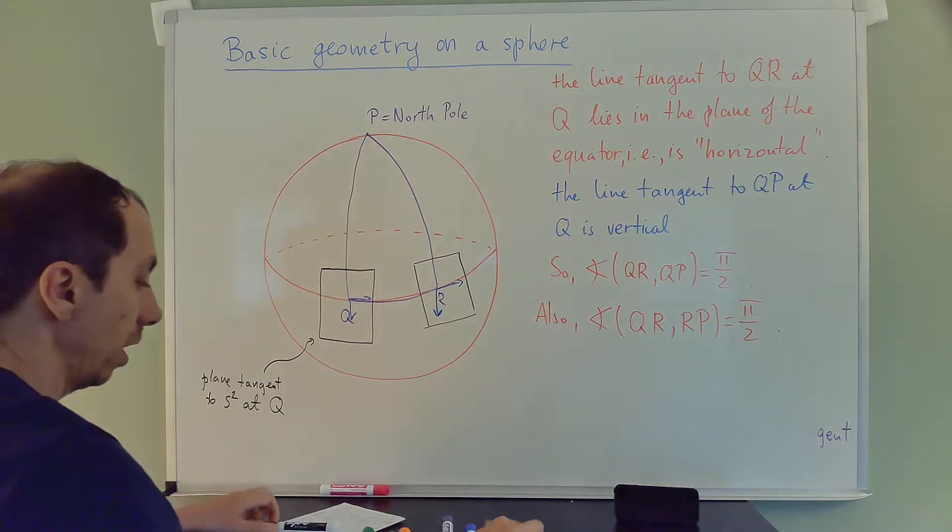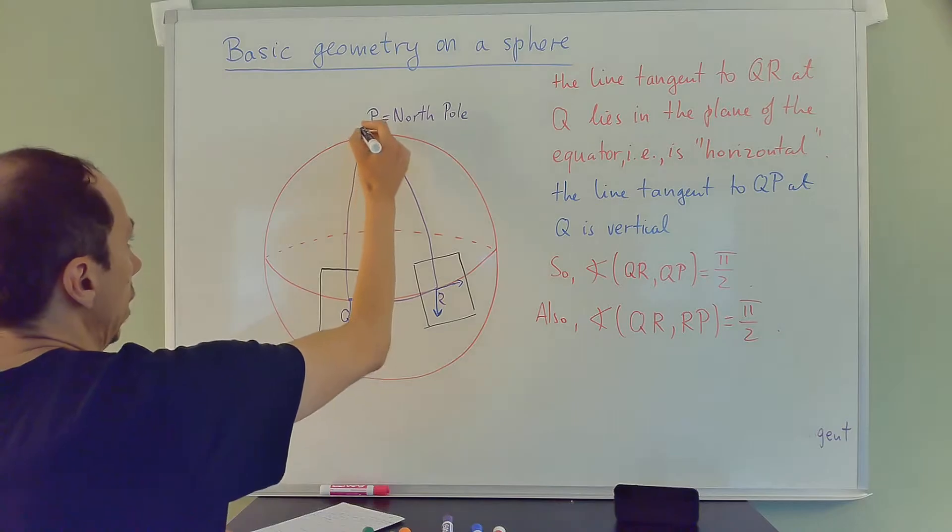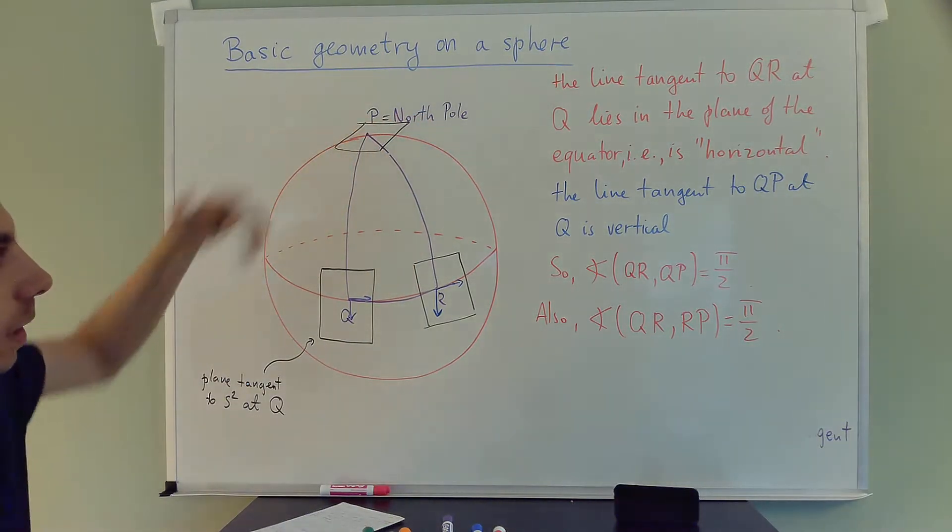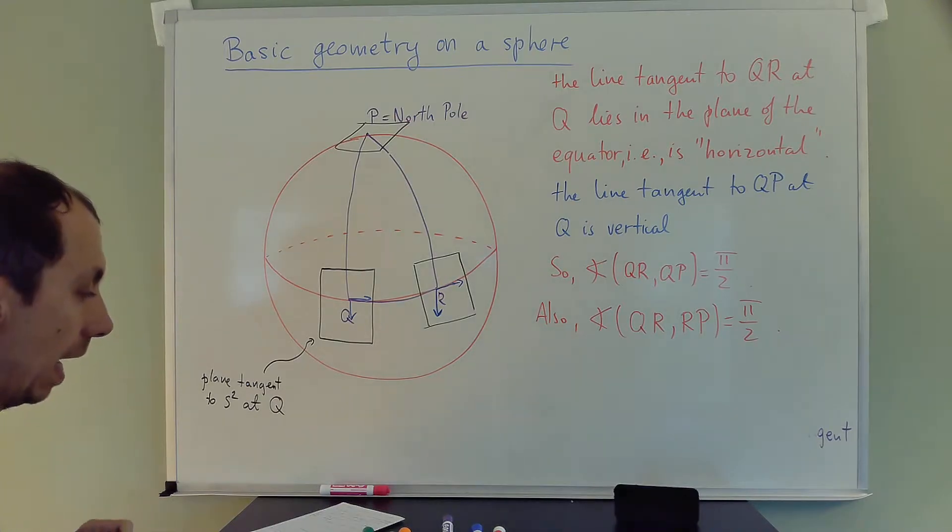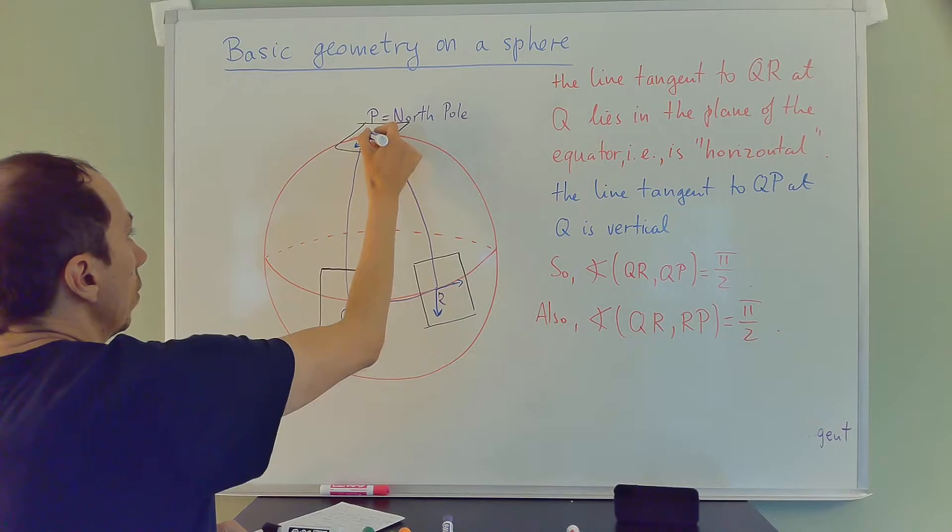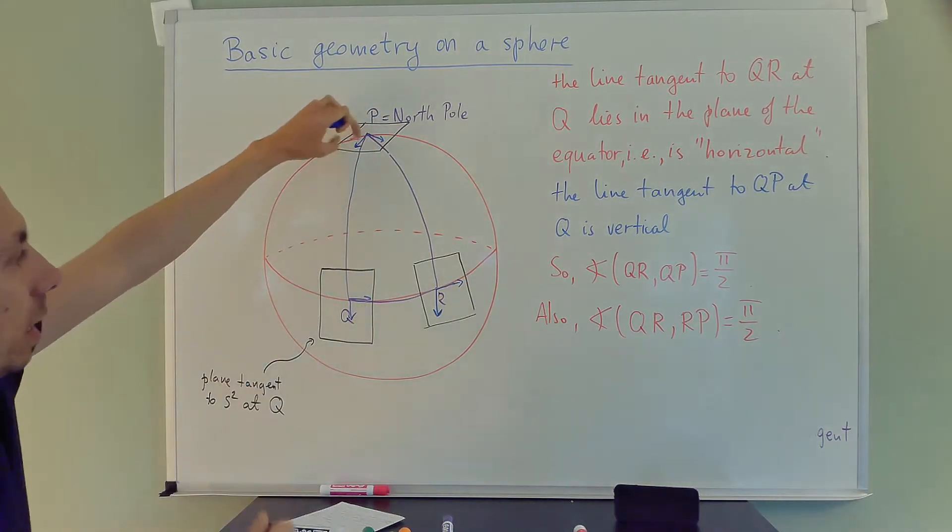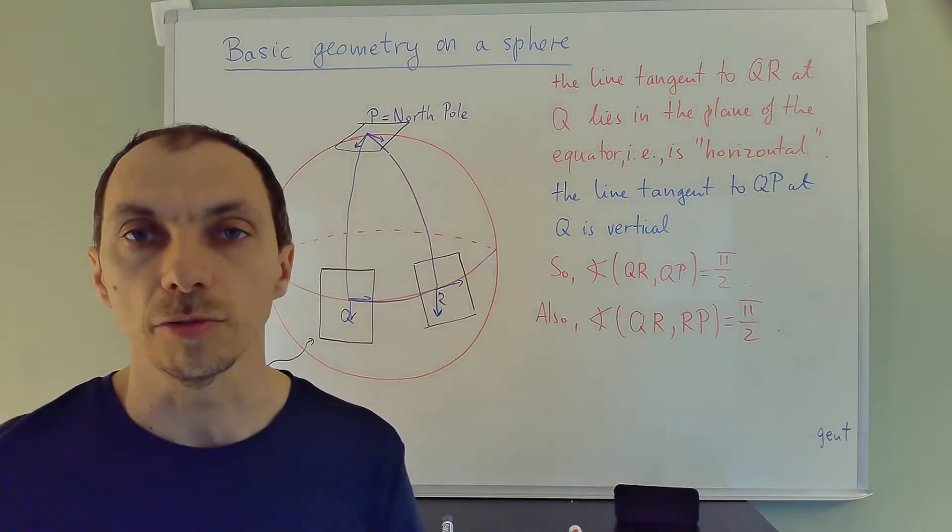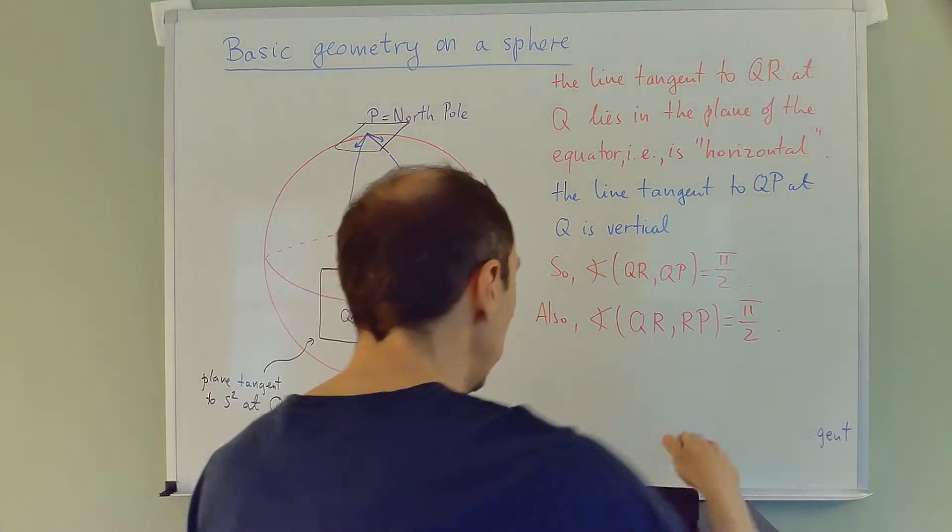I mean, the plane tangent to the north pole looks kind of like this—it's a horizontal plane—and these two tangent vectors are like this and like that. That's probably not the right angle here on my picture, but it's anyway an angle greater than zero. So we get the following conclusion here.